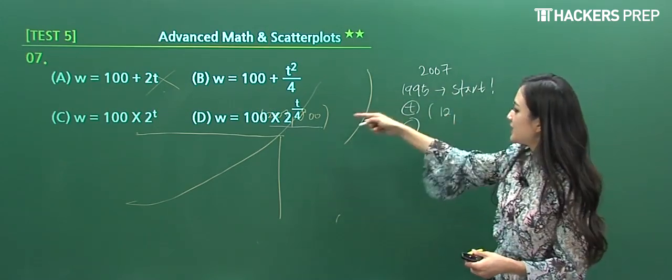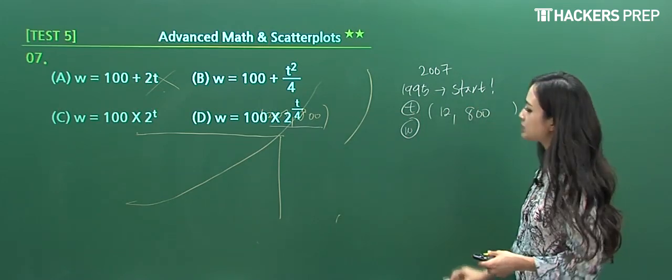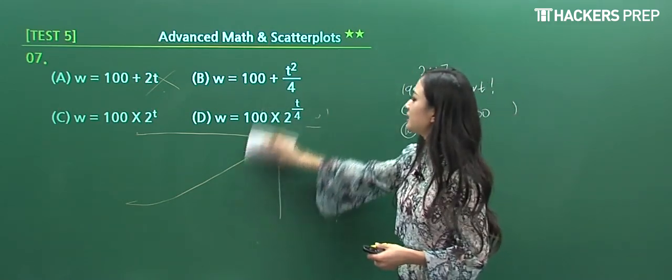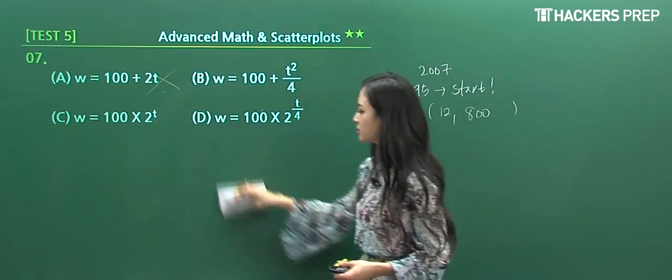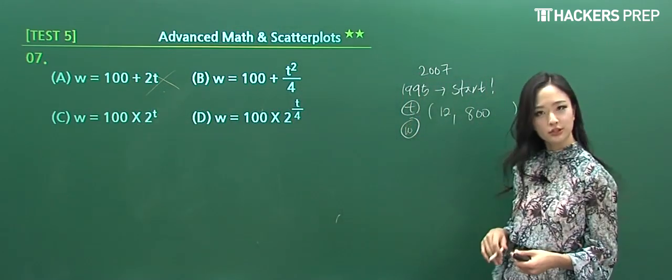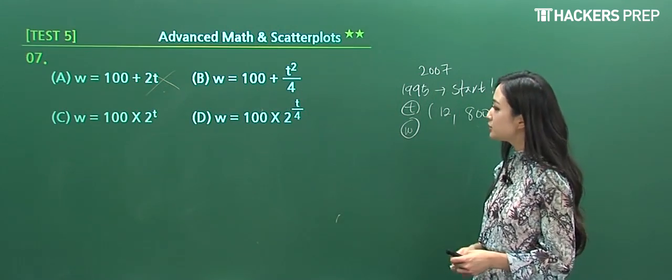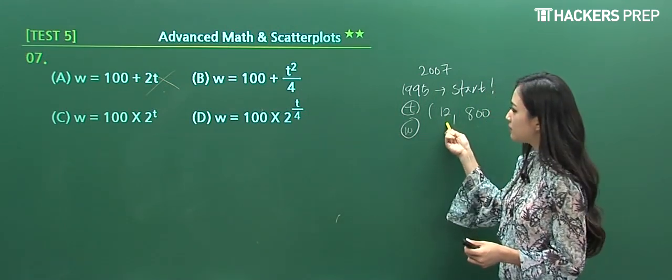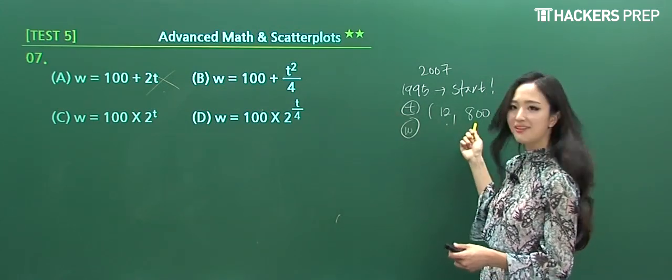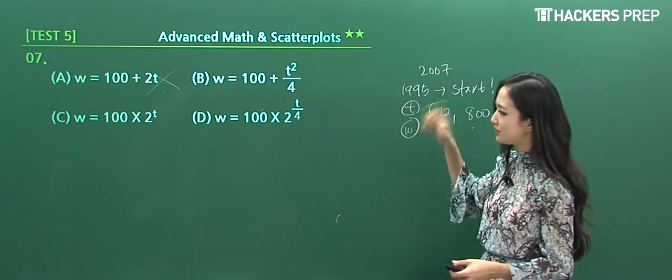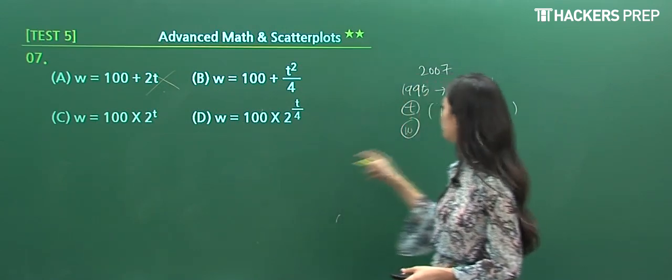The total population is 800, so all we have to do is plug in t equals 12 and see which of the three corresponds to 800. Answer choice B: when we plug in 12 squared, that's 144 divided by 4—I don't think we get 800. Take that one out. Answer choice C: when we plug in 12 into the exponent, it becomes a really big number, so that one's out as well.